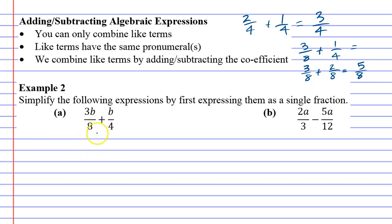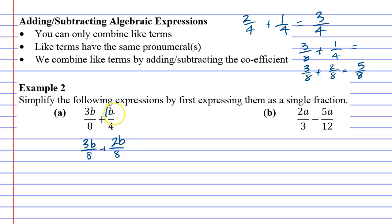We're going to do question A exactly the same way. You're going to keep this as 3B over 8, and we're going to double the second fraction. Now remember this is really 1B. So if I double the 4 I get 8, and if I double 1B I'm just going to get 2B. Just think of it — if I've got 1B and I double it, I've now got 2Bs.